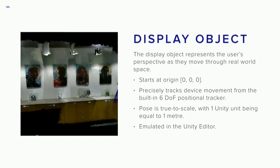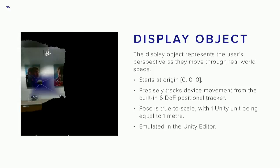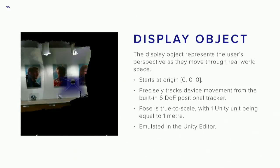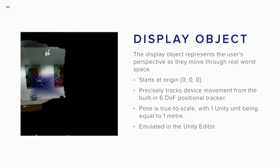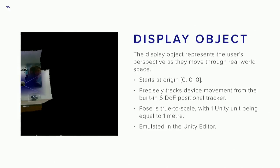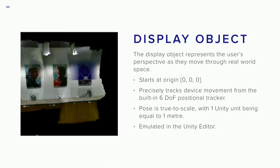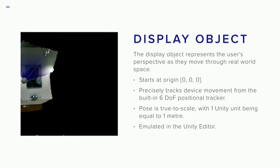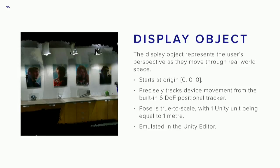Diving in a little deeper — the display object represents the user's perspective as they move through the real world space. When the application starts, I'm sitting at the origin, 0, 0, 0 in the Unity hierarchy. As I move one meter, I translate one Unity unit in the scene graph. So everything is true to scale. You'd see, much as the image on the right, a helmet painting this 3D reconstruction — that would be the display object in the Unity hierarchy. This is part of our 3D reconstruction demoed at our booth today if you want to take a look. It's true to scale. If you're in the editor and don't want to deploy to device yet, you hit play and can click-drag and use WASD to emulate all that functionality.